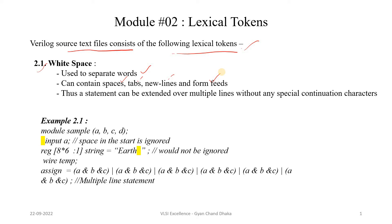We will see this through an example. In this example, you can see there is a white space at the start of the second line — any space present at the start of a line in a Verilog HDL text file will be ignored. If you see the third line, there is a white space present after 'earth' and before the double quote, so this is not going to be ignored — the string is going to store the white space as well.